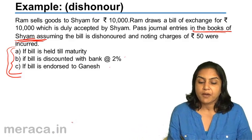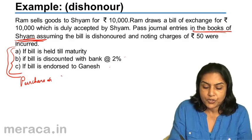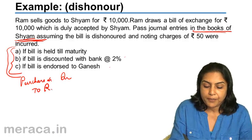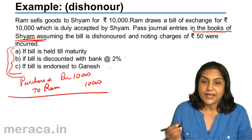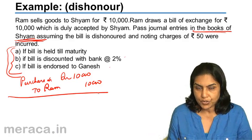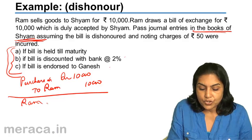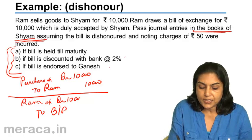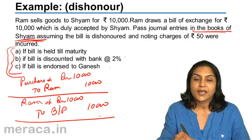First entry: Ram sells goods to Shyam, so Shyam has bought the goods. The entry in Shyam's books is purchase account debit to Ram, amount Rs. 10,000. Next, Ram has drawn a bill and Shyam has accepted it. Since Shyam has accepted the bill, it is a bills payable in Shyam's books. Bills payable is a liability, so we credit bills payable. We have given this to Ram, so: Ram's account debit to bills payable. With this bills payable, Shyam has settled his liability for the credit purchase.